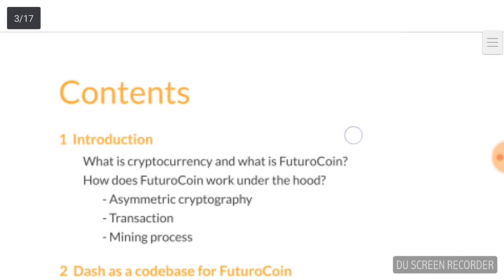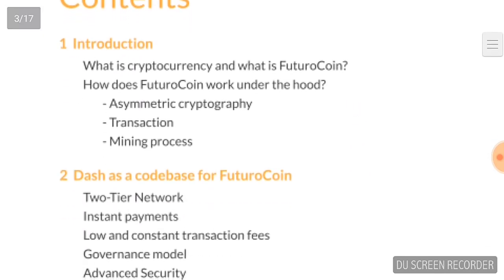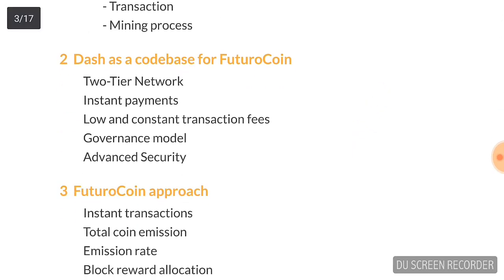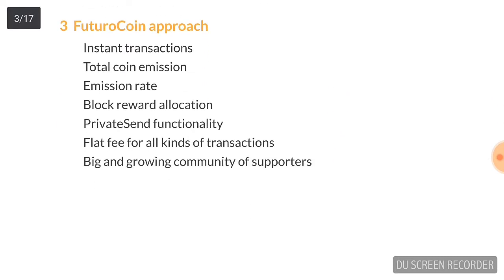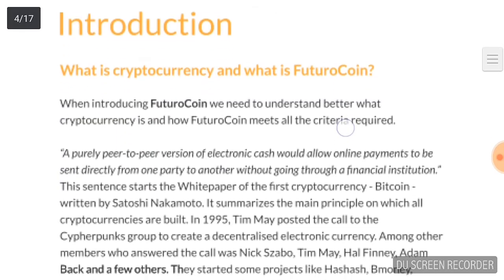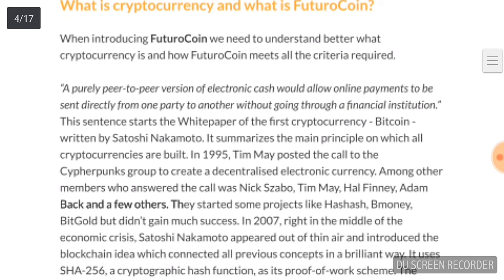In this white paper, they have declared each and everything — just going through the white paper you will be able to read and understand everything. It covers: what is cryptocurrency and FutureCoin, cryptography, transaction, mining process, and its technology based on Dash coin. The two-tier network system, instant payments, low and constant transaction fees, governance model, and the advanced FutureCoin approach — covering total coin emission, emission rate, block rewards allocation, private send functionality, and flat fee for all kinds of transactions.